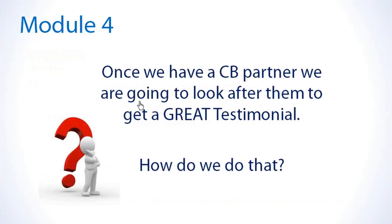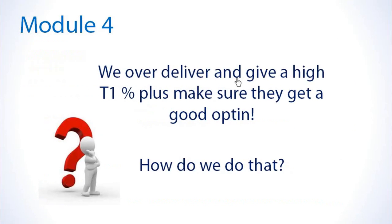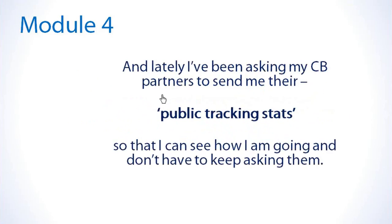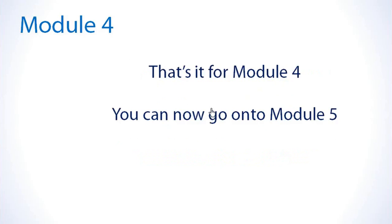Once we have a click banking partner, we're going to look after them and give them a great testimonial. How do we look after them? We over-deliver and give high tier-one plus, making sure they get a good opt-in rate. In ClickMagic's rotator we can nominate the amount of over-delivery and specify the percentage of tier one. Lately I've been asking for the click banking partner's public tracking stats so I can see in real time how I'm looking after them. This is very powerful and makes your job a lot easier. That's it for Module 4 — we can now go on to Module 5.